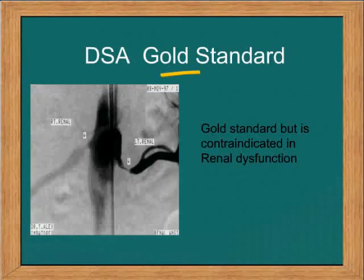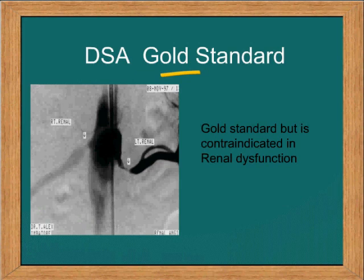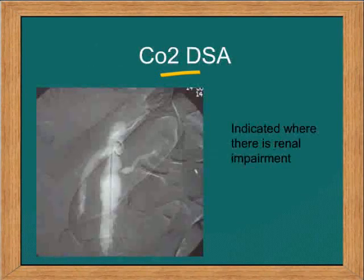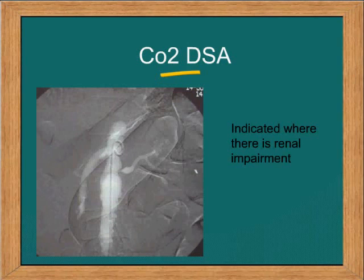Even today, with CT angiography available, DSA remains the gold standard, though one would not use it solely to diagnose renal artery stenosis. The problem is that since contrast is given, it is not the modality of choice when there is renal impairment. Carbon dioxide angiography, on the other hand, is the safest way to angiographically evaluate the renal arteries when renal function is impaired.